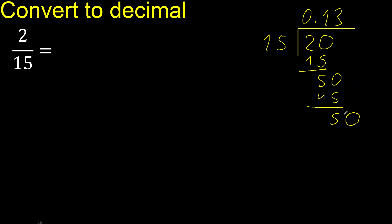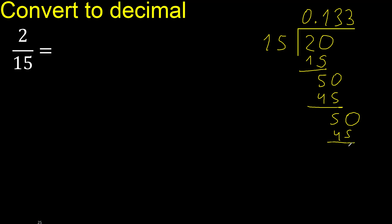The point is here. 15 multiplied by 3 is 45. Subtract. Complete. This repeats, therefore it repeats — therefore 3 repeats.